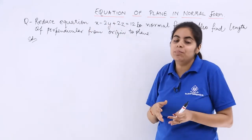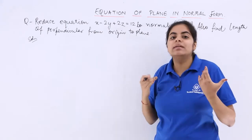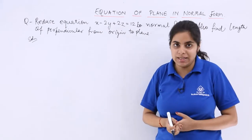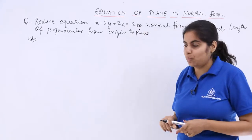This will give me the direction cosines of the normal to the plane. That is very much required in order to find the normal form equation.